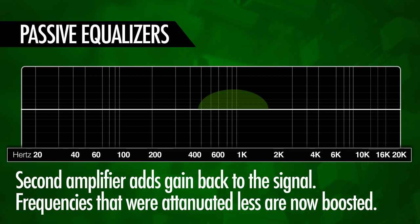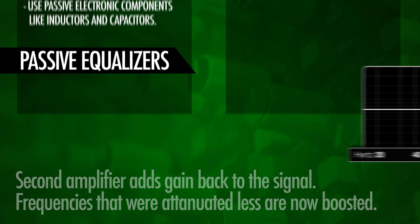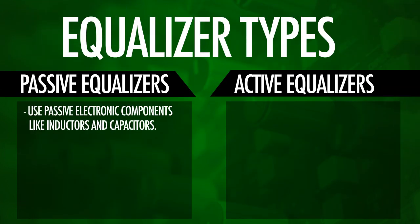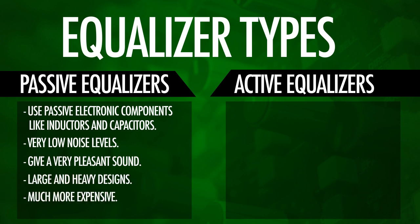So the selected frequencies are now boosted because these were not attenuated by the same amount. The advantage of passive equalizers is that they have very low noise levels and they can give a very pleasant sound. They're also being used a lot in mastering situations. The disadvantage of passive equalizers is that they're much more expensive and larger in size than active equalizers.